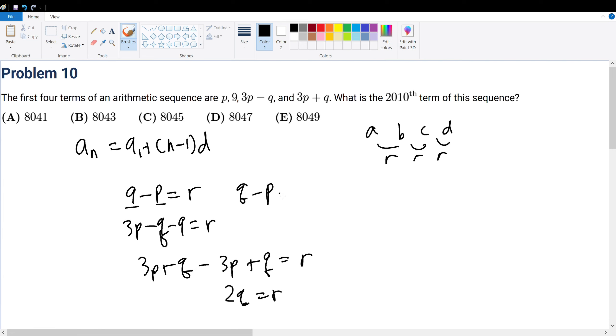9 minus p is equal to 2q. We also know that 3p minus q is equal to 2q plus 9. So in other words, 3p minus 3q is equal to 9, which means p minus q is equal to 3.